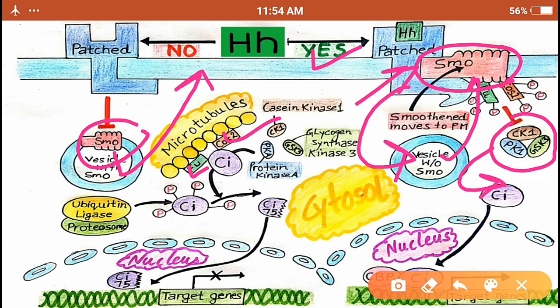not going to be seen. And if this doesn't happen, what is the result? CI is not going to be broken into CI-75, and the CI is going to behave normally and go to the nucleus for the transcription of the genes.